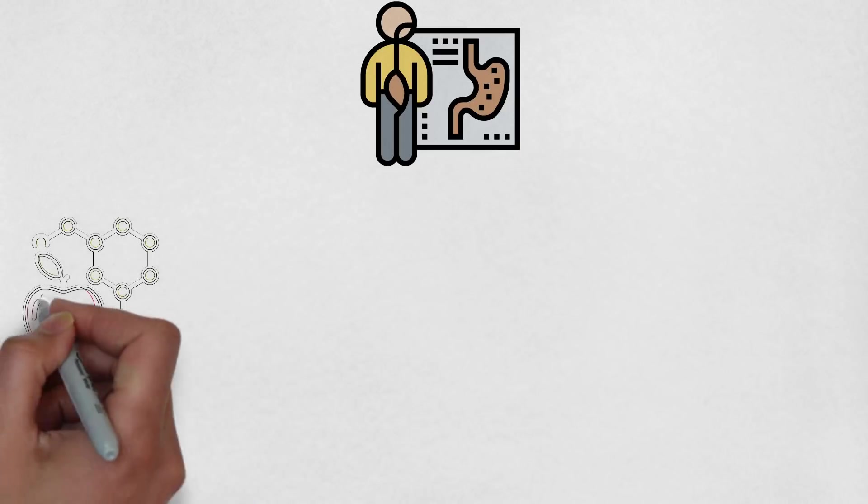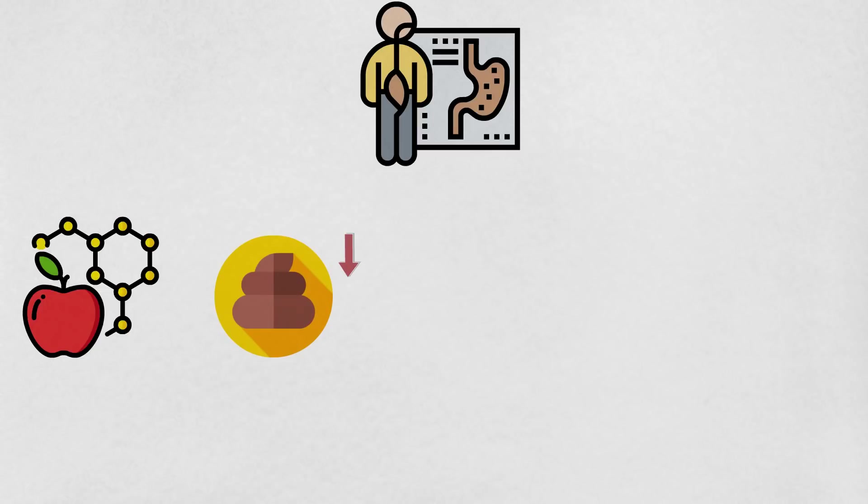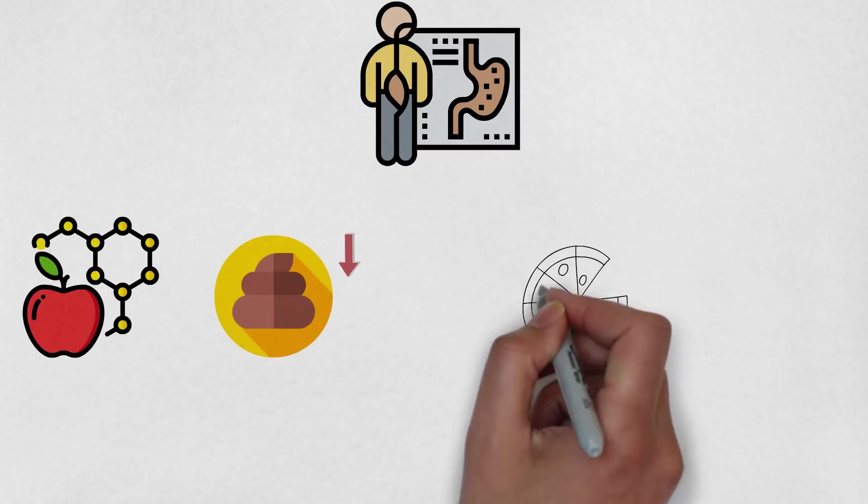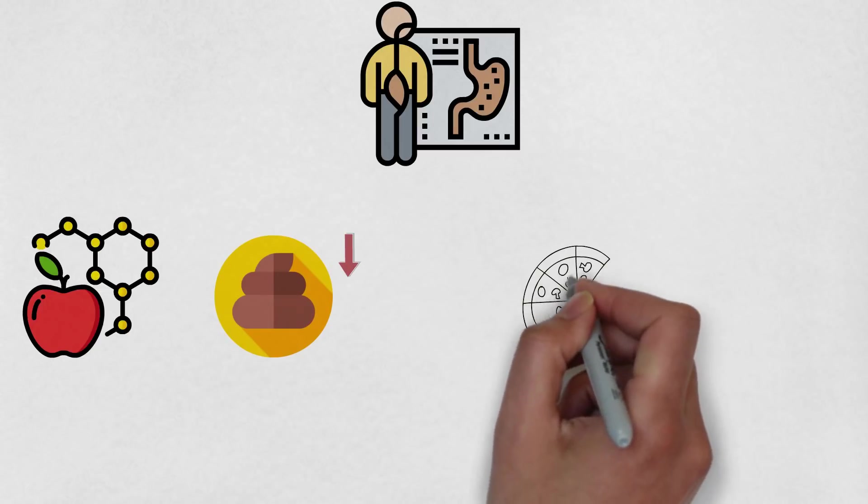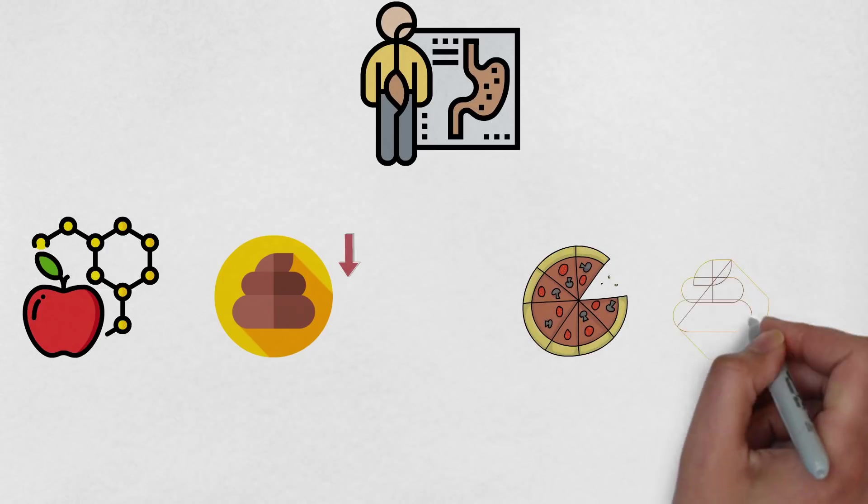If you eat nutrient-packed food, your poop quantity will decrease. But when you eat more fast foods, which contain low nutrients, your body cannot absorb any nutrients from it, which leads to a higher amount of poop emission.